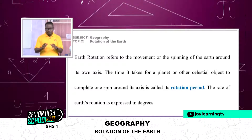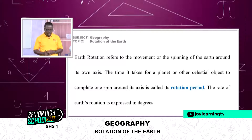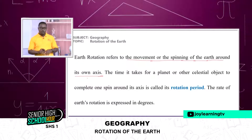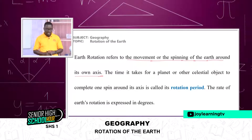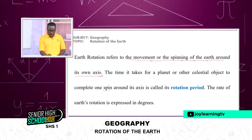Now, coming to earth rotation. Rotation refers to when an object spins on its own axis. So how about earth rotation? Earth rotation, or the rotation of earth, refers to the movements or the spinning of the earth around its own axis. The time that it takes for a planet or other celestial object to complete one spin around its axis is called the rotation period.